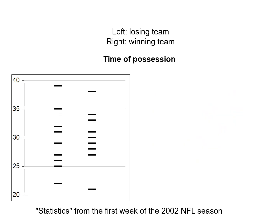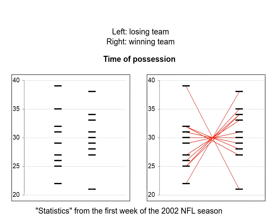Our final statistic is time of possession — how much time a team controls the ball. It's a little less clear but looks like it increases from left to right. When we connect the pairs we get a completely different pattern. If there are 60 minutes in the game and one team had the ball for 38 minutes, the other team has it for 22 minutes. This makes sense when we think about it, and by making this figure you can tell just from looking at it that this statistic acts very differently from the previous ones. We can also identify this one very unusual outlier game.